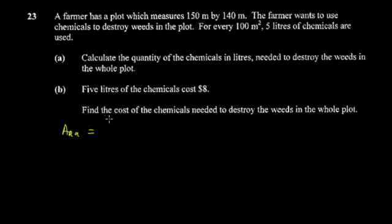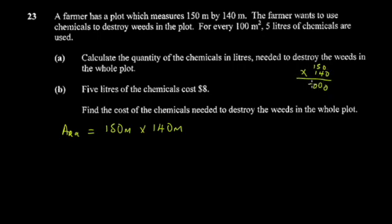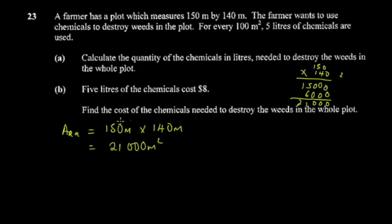The area equals the length multiplied by the width, which is 150 meters multiplied by 140 meters. Working through the multiplication: 150 × 140 = 21,000 square meters.